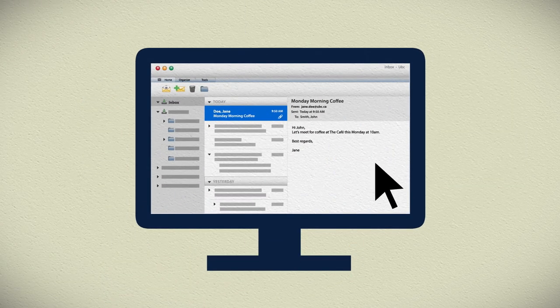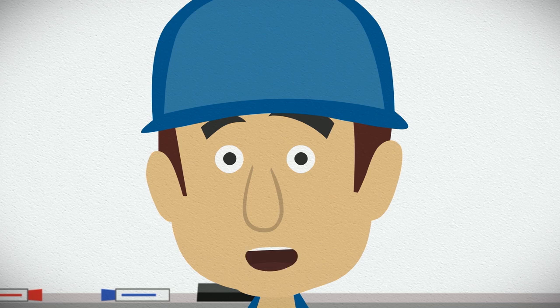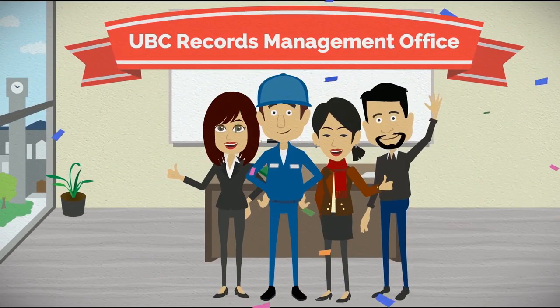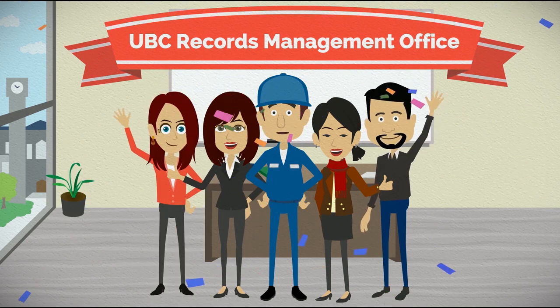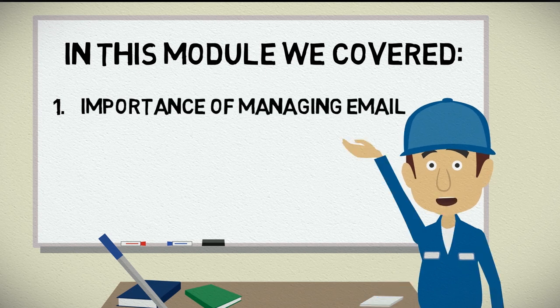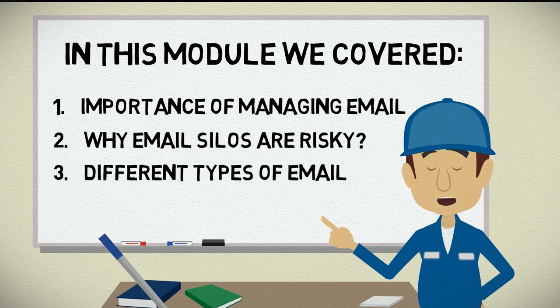You can start reducing your email overload right now by removing transitory email from your inbox, but managing email should be part of a broader, documented records management strategy for your entire unit. The Records Management Office at the University Archives is available to help you design a strategy for managing university records within your unit. Check the resource section of this course for contact information. In this module, we covered: 1. The importance of managing emails centrally as a university record. 2. Why email silos are bad for business and risky to the university. 3. Types of email and how to manage them.